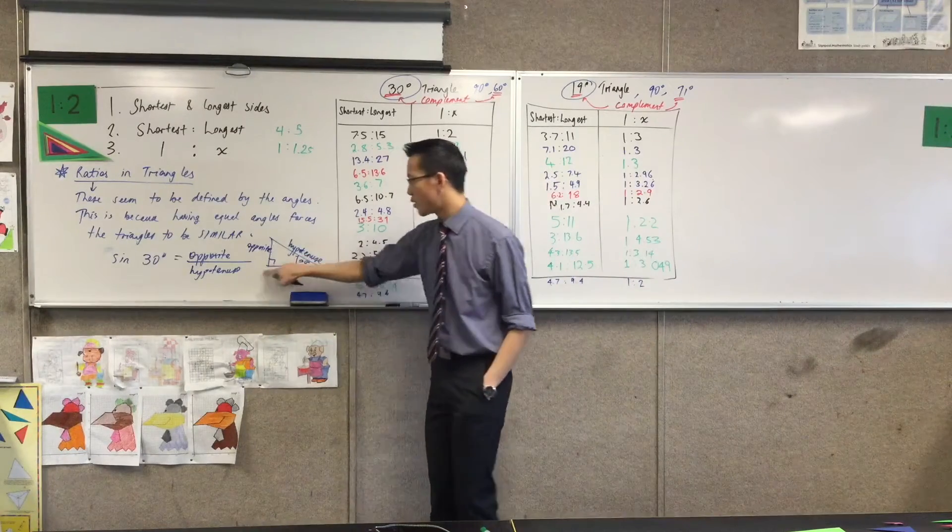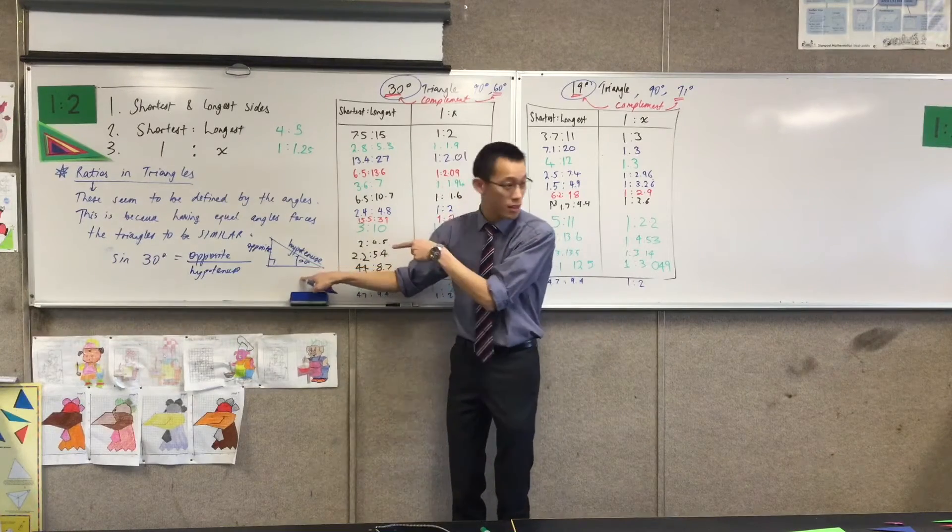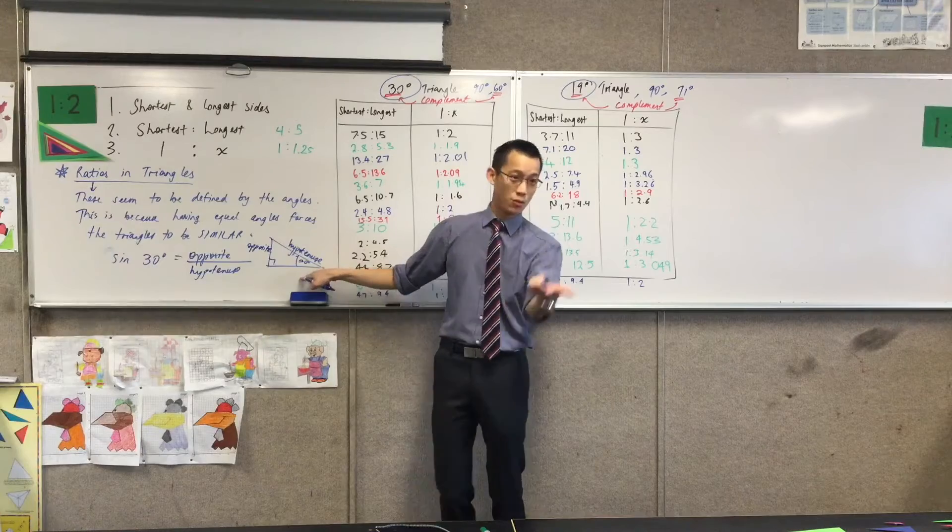But I need a name for this other side, this one down here. So this side here is right next to the angle you're after, it's right next to the 30 degrees. So right next to you we use the word adjacent.